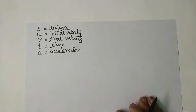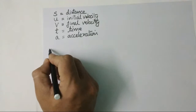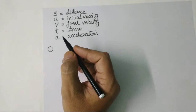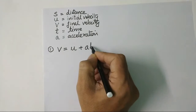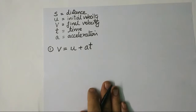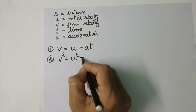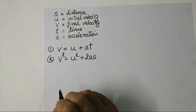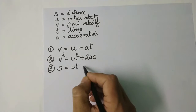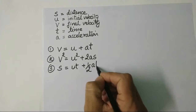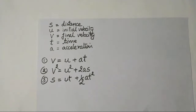The three equations of motion are: first equation — v equals u plus at; second equation — v squared equals u squared plus 2as; and third equation — s equals ut plus half at squared. These are the three equations of motion which are commonly used.